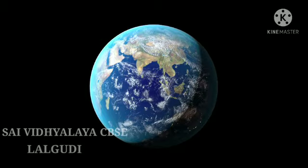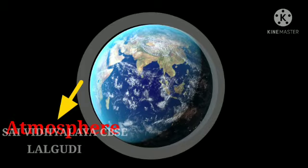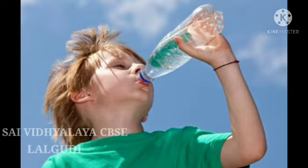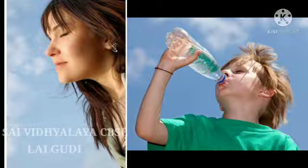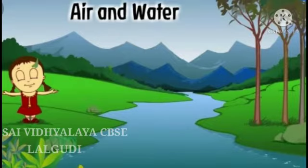The earth is surrounded by a layer of gases. This layer is called the atmosphere. The atmosphere protects our earth from the harmful rays of the Sun. We breathe in air and drink water, but do you think we can live without air and water?